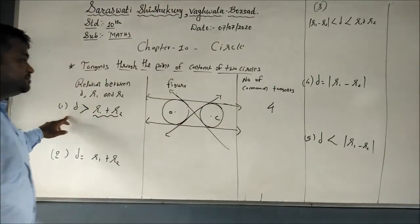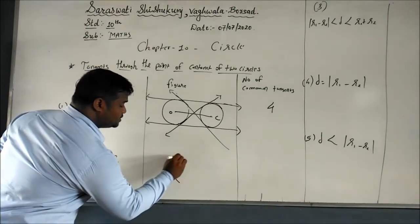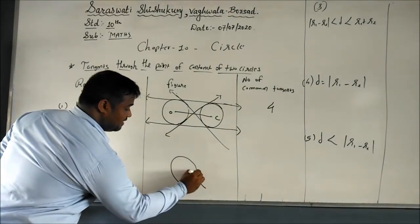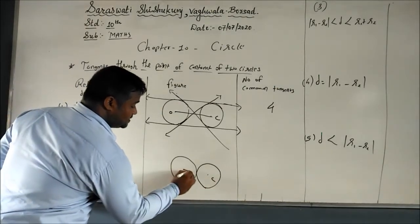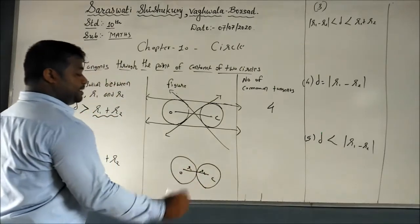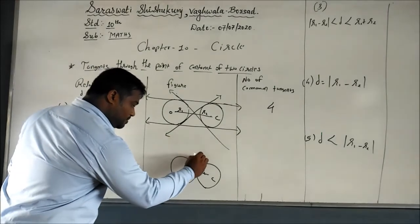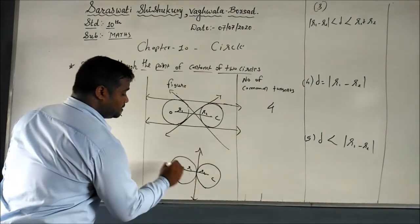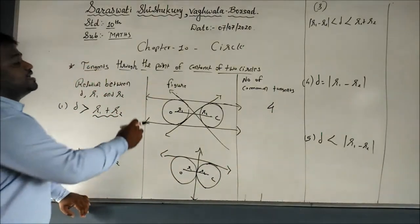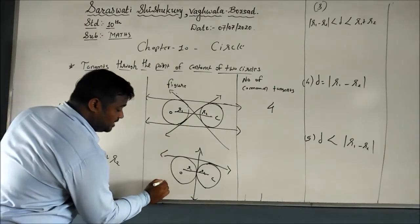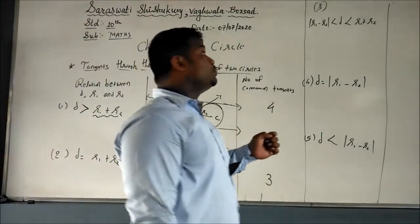When D equals R1 + R2, the two circles touch externally at one point, and we get three common tangents. When D is less than R1 + R2, the two circles intersect at two points, and we get two common tangents.